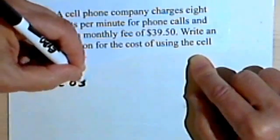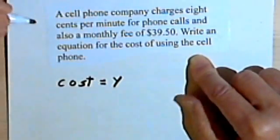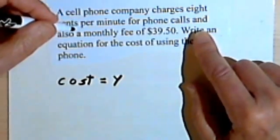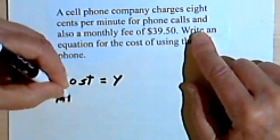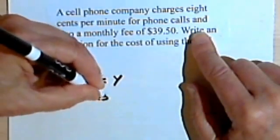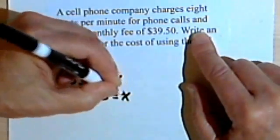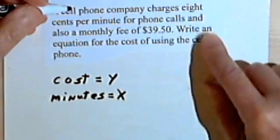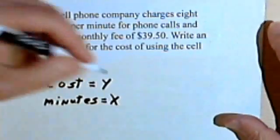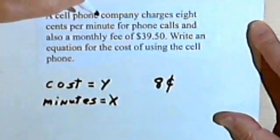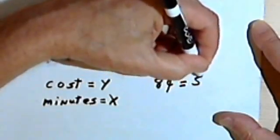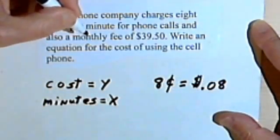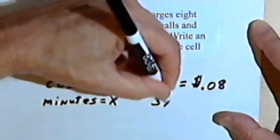So once again we've got the cost, and the cost is what we're looking for, so we're gonna make that y. And the thing that's changing is going to be the minutes, and the minutes is x. Let's just write down the other information we have. We have 8 cents, so let's write that in terms of dollars, that's going to be 0.08, and a basic fee of $39.50.